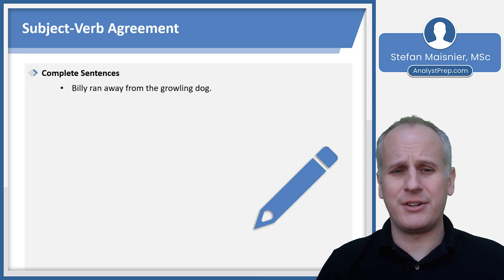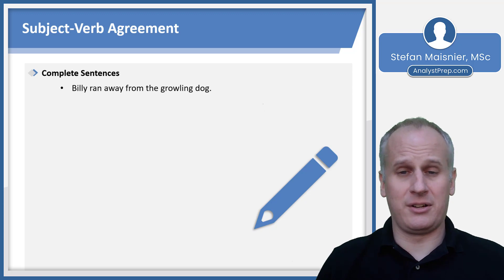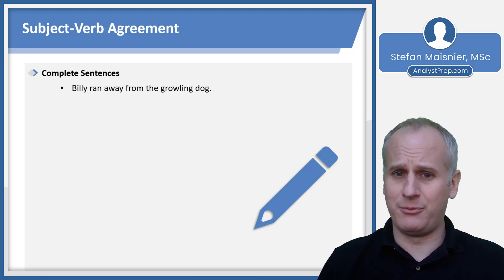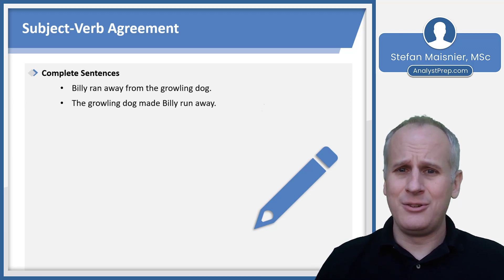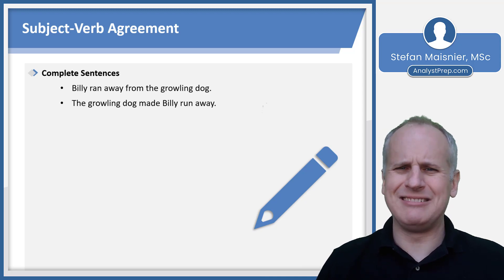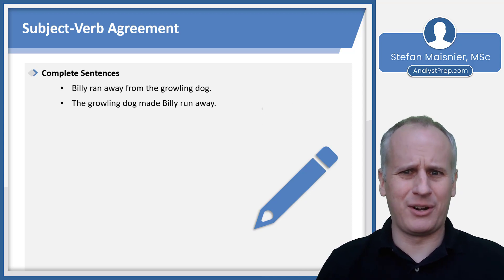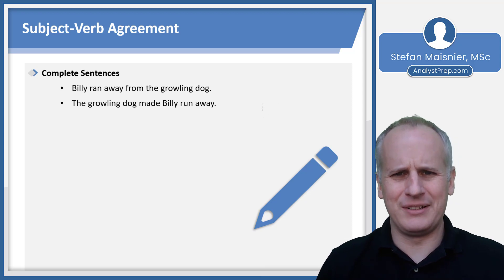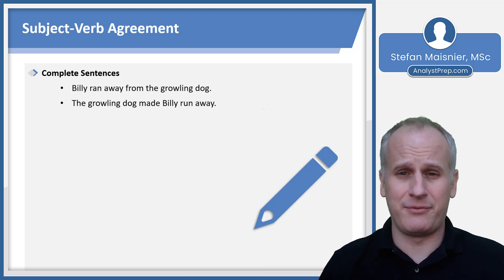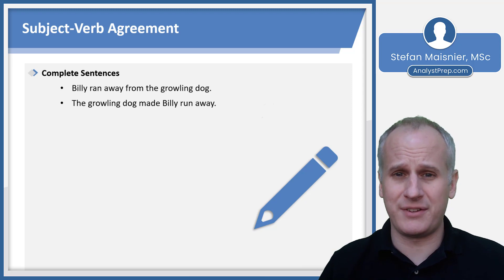Let's look at examples of complete sentences. 'Billy ran away from the growling dog' — we know the subject is Billy, he ran away, and we know what he ran from. You can also express this in passive voice: 'The growling dog made Billy run away.' This is still a complete sentence because we've made the growling dog the subject and used 'made' as the main verb. We've got a subject and a verb.